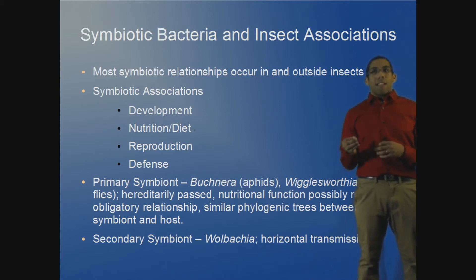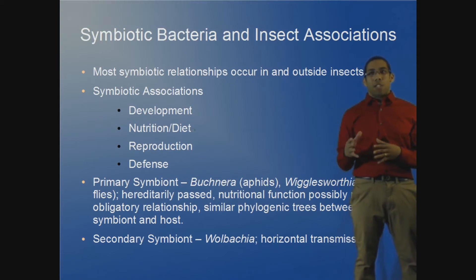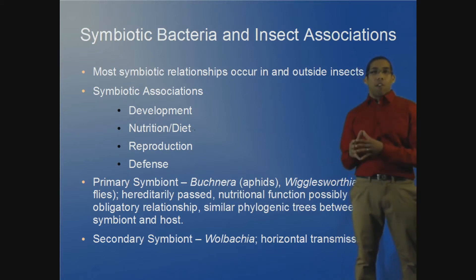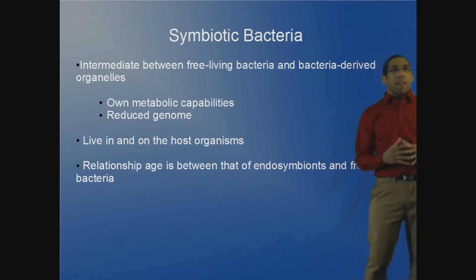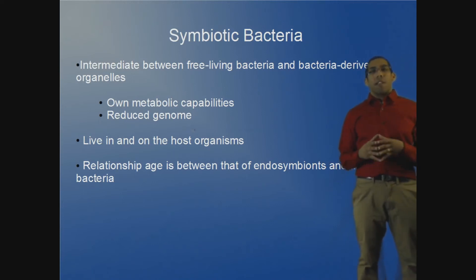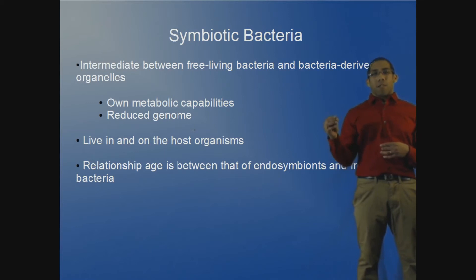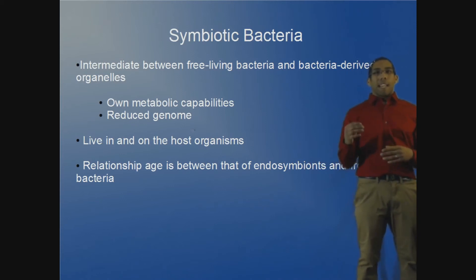The next category is the secondary symbiont, which is laterally or horizontally transferred from one organism to the other — usually through some mechanism other than reproduction. These symbiont bacteria are intermediates between free-living bacteria and bacteria-derived organelles. They are somewhere between free-living organisms like E. coli or Salmonella, and organelles such as chloroplasts and mitochondria.